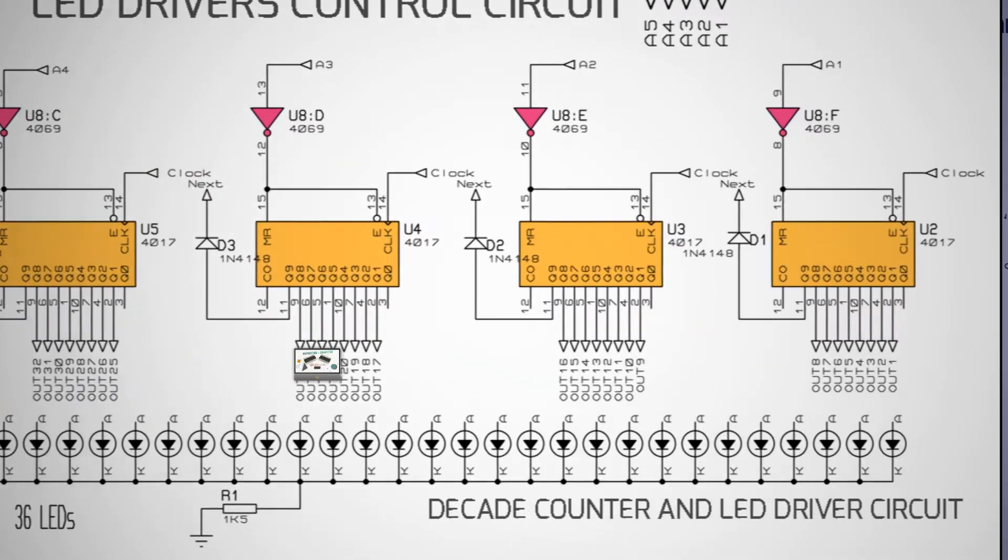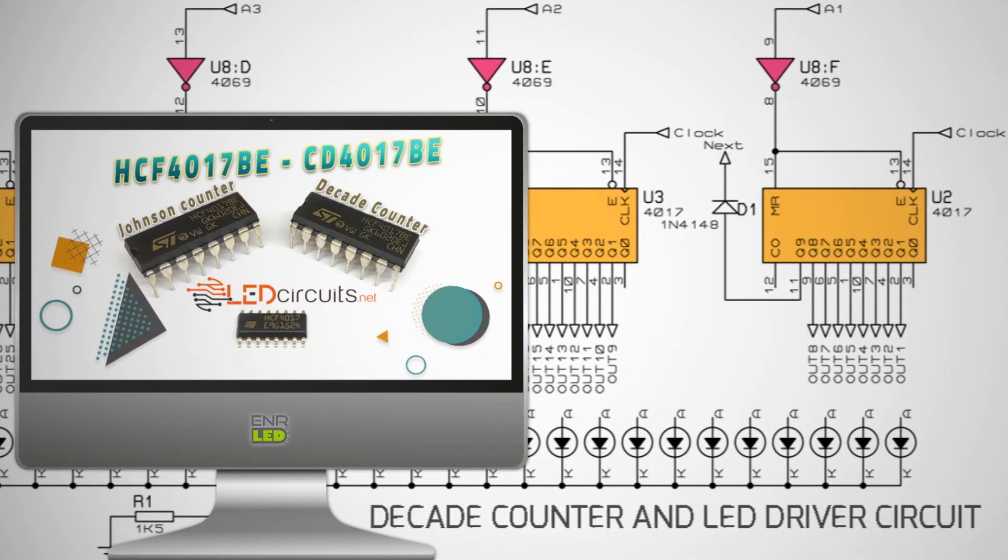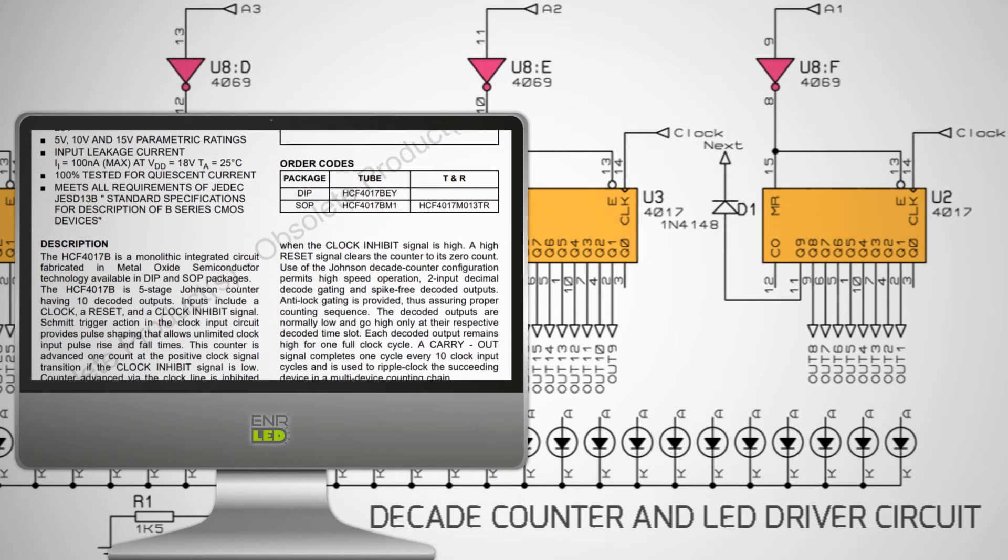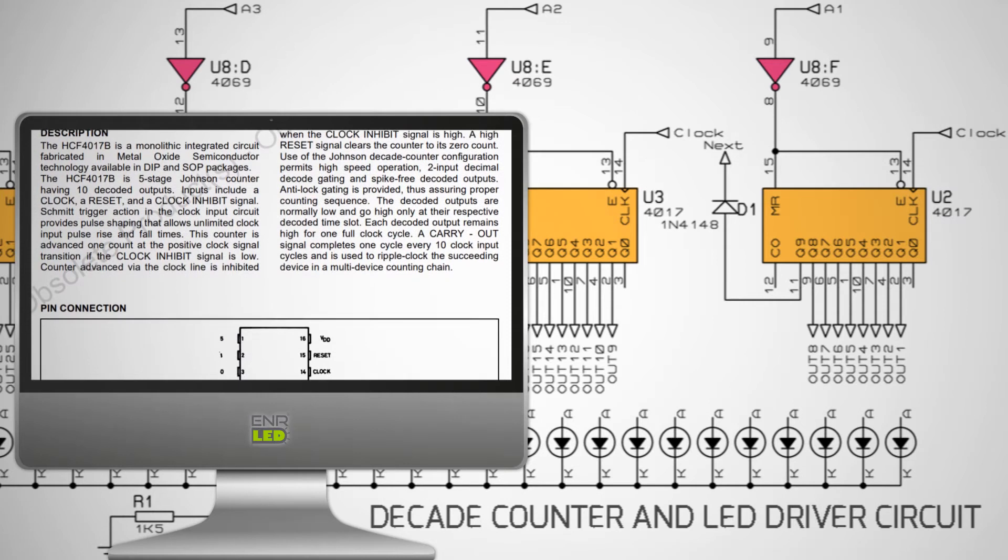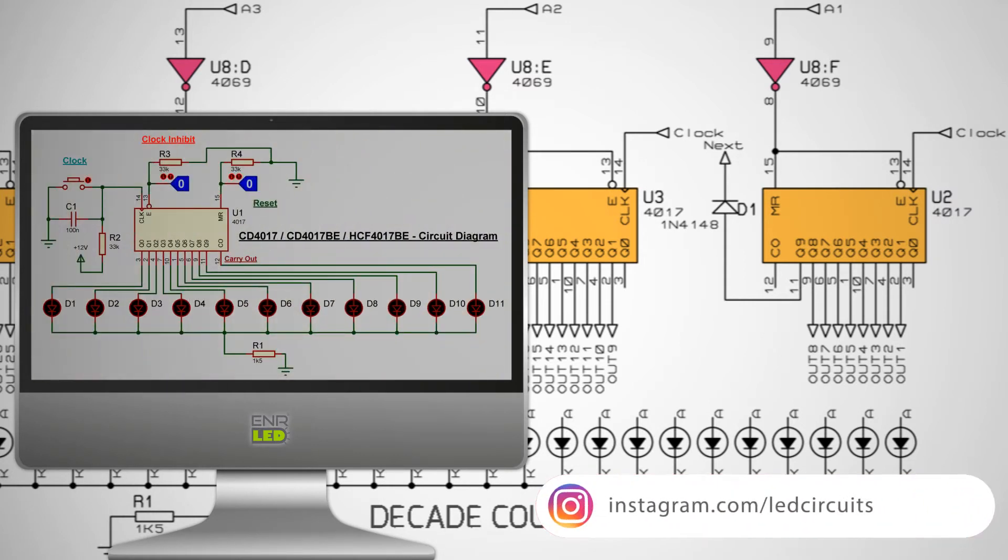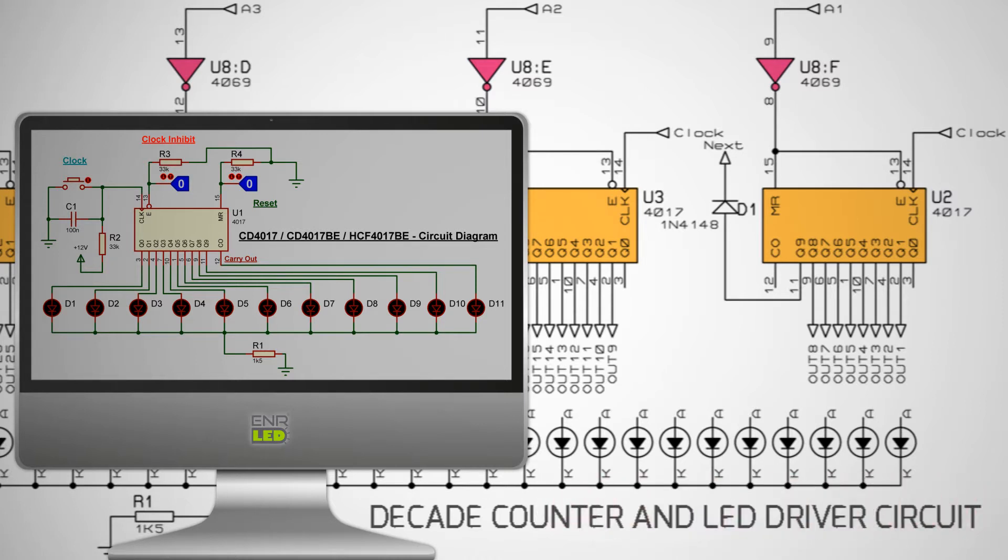I created the decade counter in the LED driver circuit with CD4017. The CD4017 is a five-stage Johnson counter IC and has 10 outputs. The operating voltage is between 3 to 20 volts. Q0 to Q9 counts in decimals according to the pulses applied to inputs 4017. Clock pin 14, clock inhibit pin 13, and reset pin 15.